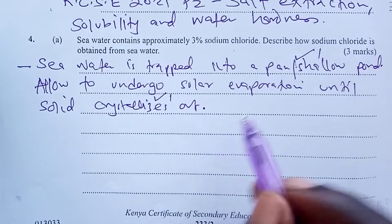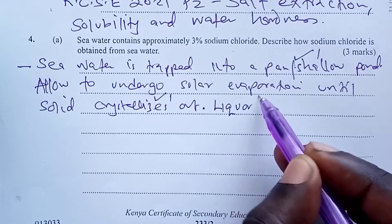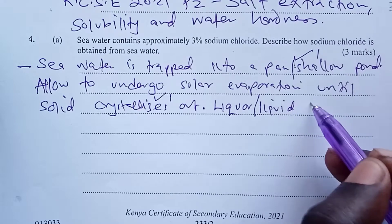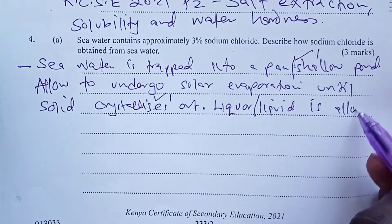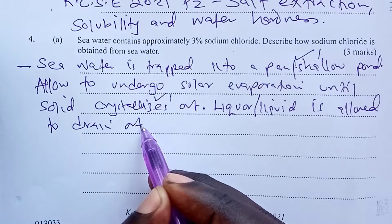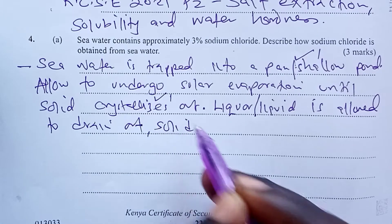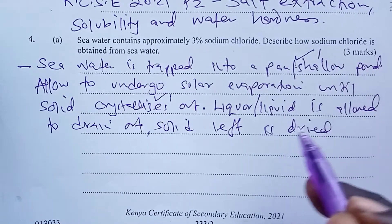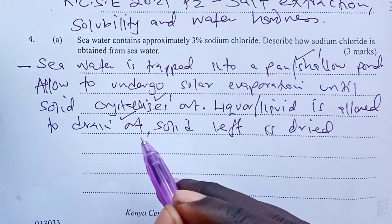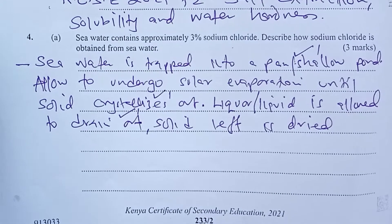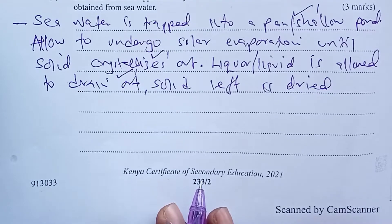Finally, the liquor — which is the liquid part — is allowed to drain out, then the solid left is dried. Draining out the liquid or the mother liquor gives the last mark. This is how sodium chloride is obtained from seawater on a large scale.